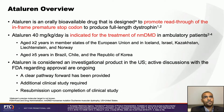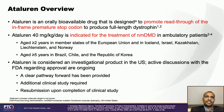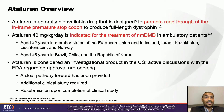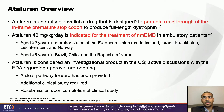Ataluren is orally available, taken three times a day, and it promotes ribosomal read-through of a premature stop codon caused by nonsense mutations to restore full-length dystrophin. There is robust data from our clinical trials supporting ataluren's ability to slow disease progression, enabling boys to walk longer, stay more physically able, have fewer accidental falls, and preserve lung function. Ataluren is indicated for nonsense mutation DMD in ambulatory boys aged two years and above in most approved countries.